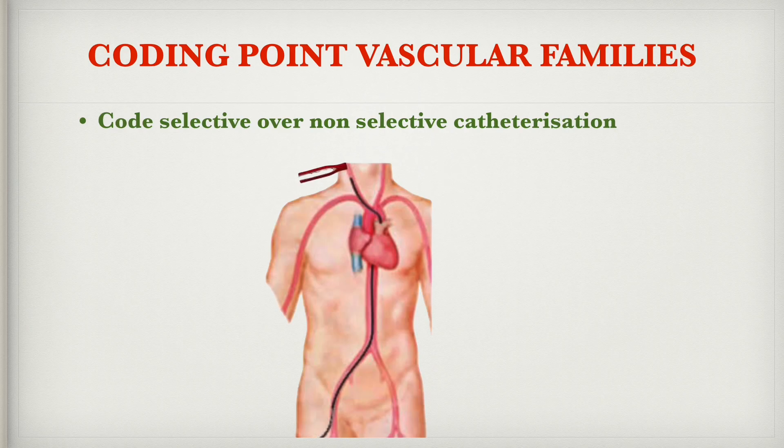Next: code selective over non-selective catheterization. Selective catheterization means when the catheter moves beyond the aorta. If the catheter moved beyond the aorta to the right internal carotid artery, code only for the selective catheterization at the right internal carotid artery.